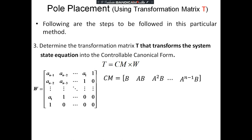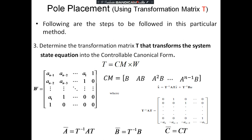In W, the second row is [a_(n−2), a_(n−3), ..., 1, 0], and each subsequent row shifts left by one, with trailing zeros. The last row becomes [1, 0, 0, ..., 0]. Using T, we obtain the transformed matrices: Ā = T⁻¹AT, B̄ = T⁻¹B, and C̄ = CT. The matrix Ā = T⁻¹AT shows only the last row contains the system coefficients −Aₙ, −A_(n−1), and so on.